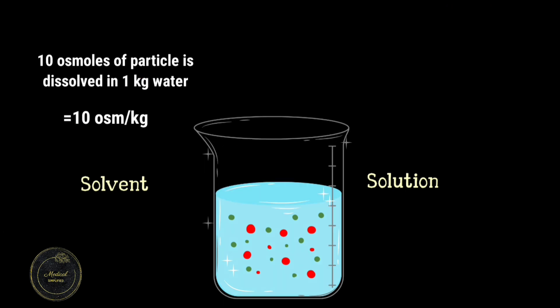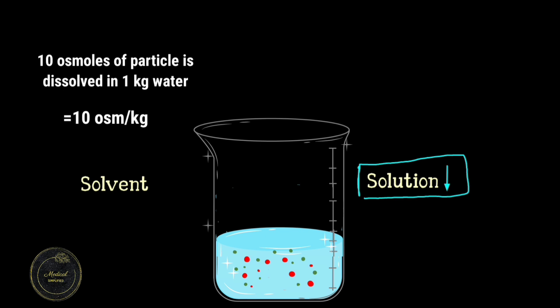Now we will quickly decrease the amount of water and see what happens. So if we decrease the amount of water from 1 kg to half kg, the osmolality will become 10 divided by 0.5 or 20 milliosmoles per kg.